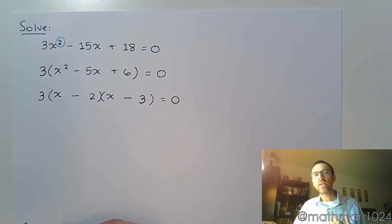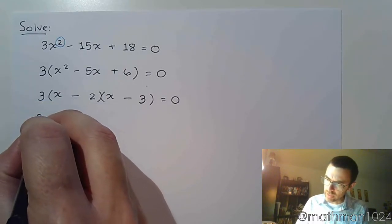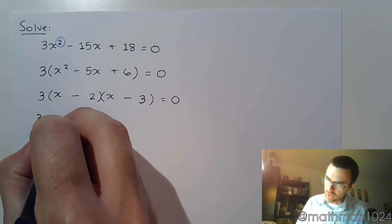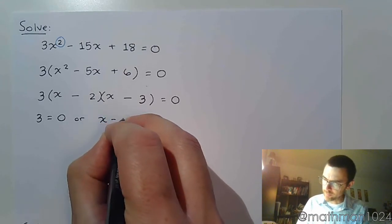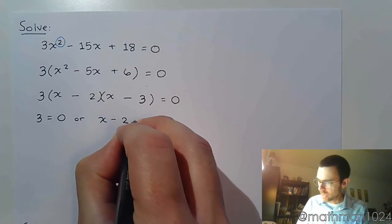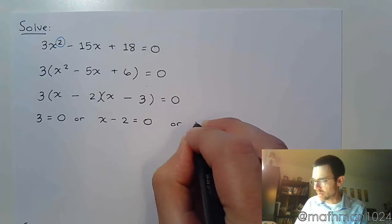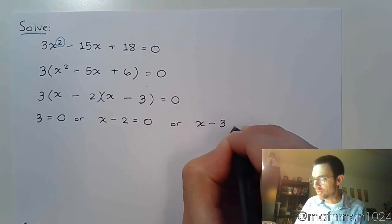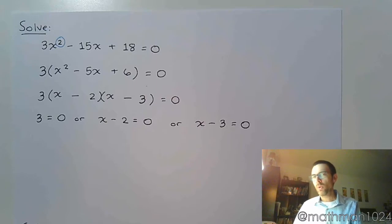Using the zero factor theorem, you set each factor equal to zero. So 3 equals zero, or x minus 2 equals zero, or x minus 3 equals zero. We're only supposed to have two solutions, but we have three factors.